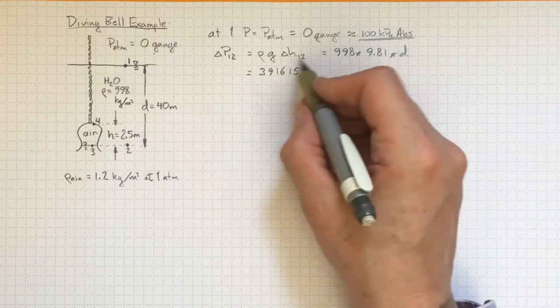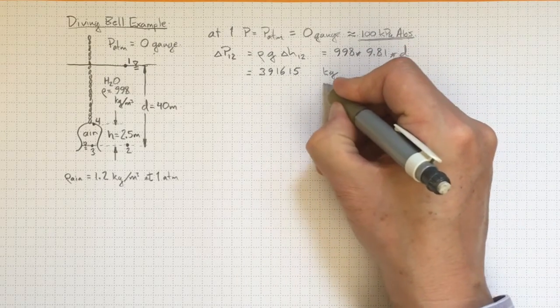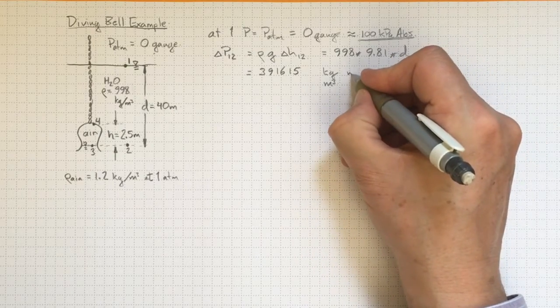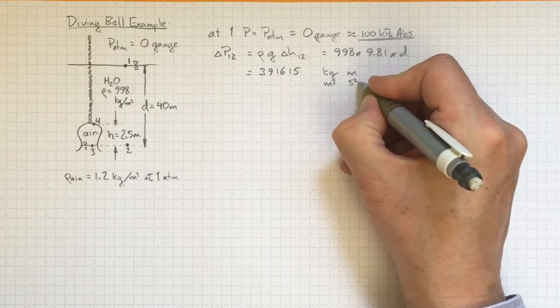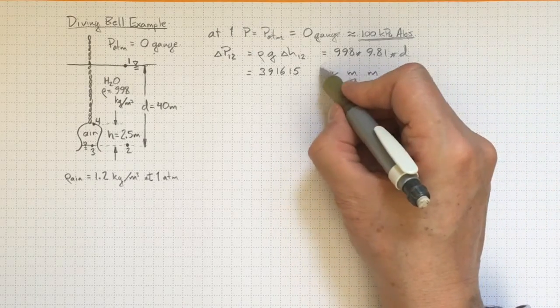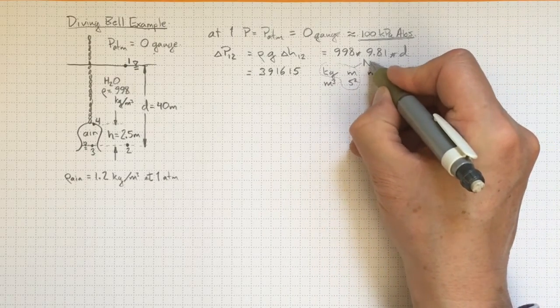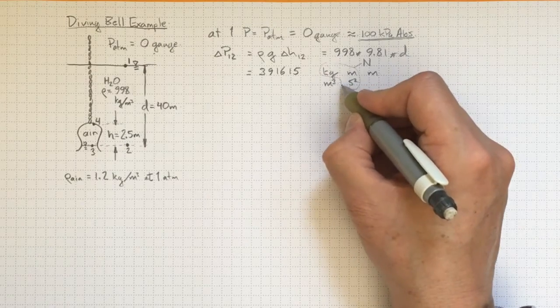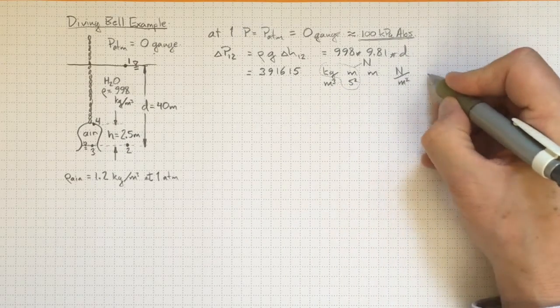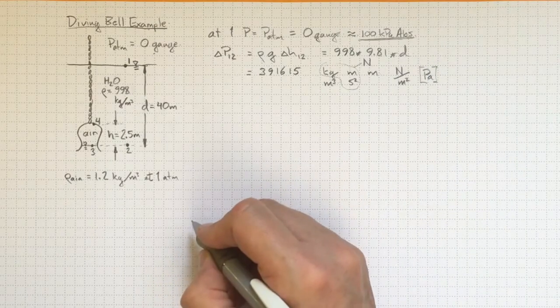The units on that are going to be density in kilograms per meter cubed, acceleration in meters per second squared, and distance under the water in meters. Now a kilogram meter per second squared, that's a newton. Meter over meters cubed would be one over meters squared, so that's newtons per square meter, or the unit we usually use for pressure, the pascal.